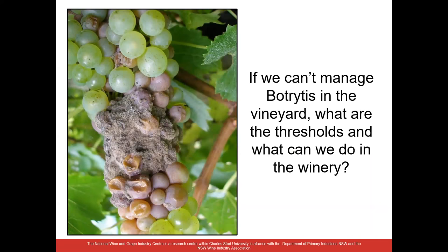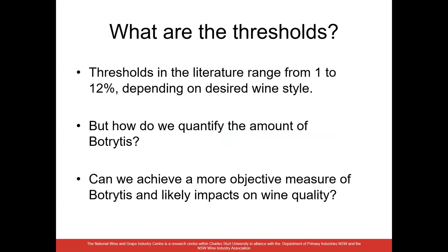That led us to the current study. If we can't manage Botrytis in the vineyard, what are the thresholds? Does it matter how much we have? And what is the cutoff when we can still make something sensible out of the fruit? Beyond that, is there anything we can do in the winery to ameliorate the faults? When you consult the literature, there are a range of different thresholds quoted, ranging from 1% up to as high as 12%, depending upon wine style.